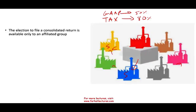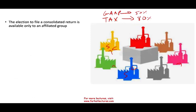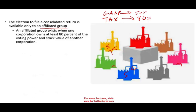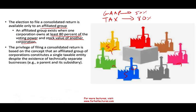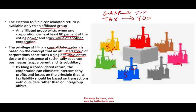The election to file a consolidated return is only available to an affiliated group. An affiliated group exists when a corporation owns at least 80% of the voting power and the stock value of another corporation, either directly or indirectly. The privilege of filing a consolidated return is based on the concept that an affiliated group of corporations constitutes a single taxable entity, despite the existence of technically separate businesses — parent and subsidiary are technically one group.